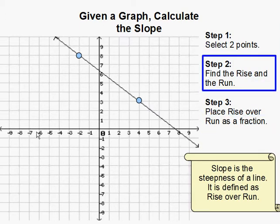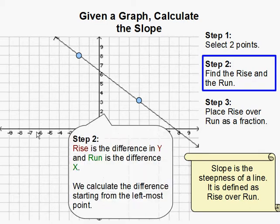Step 2: Find the rise and the run. The rise is the difference in y, that is the difference in the vertical direction to get from this point to this point.